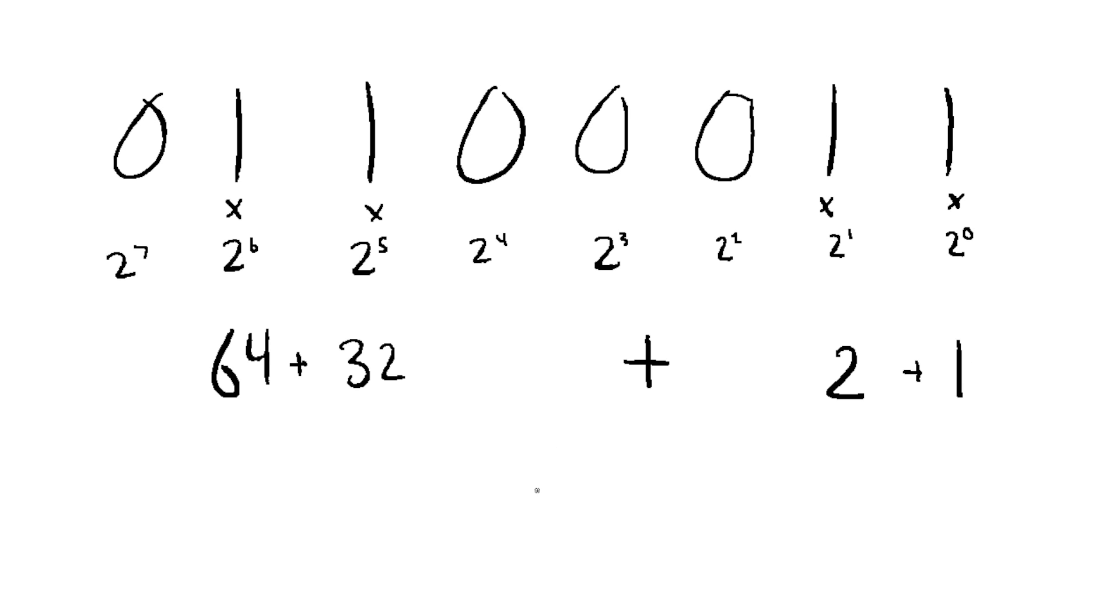Binary is really easy because every single digit only has two possible symbols, 0 and 1. The symbol 0 is always the value 0, and the 1 represents the value 2 raised to increasing powers. So now all we do is multiply them out and add the values together, and we see that this binary number is the base 10 number 99.